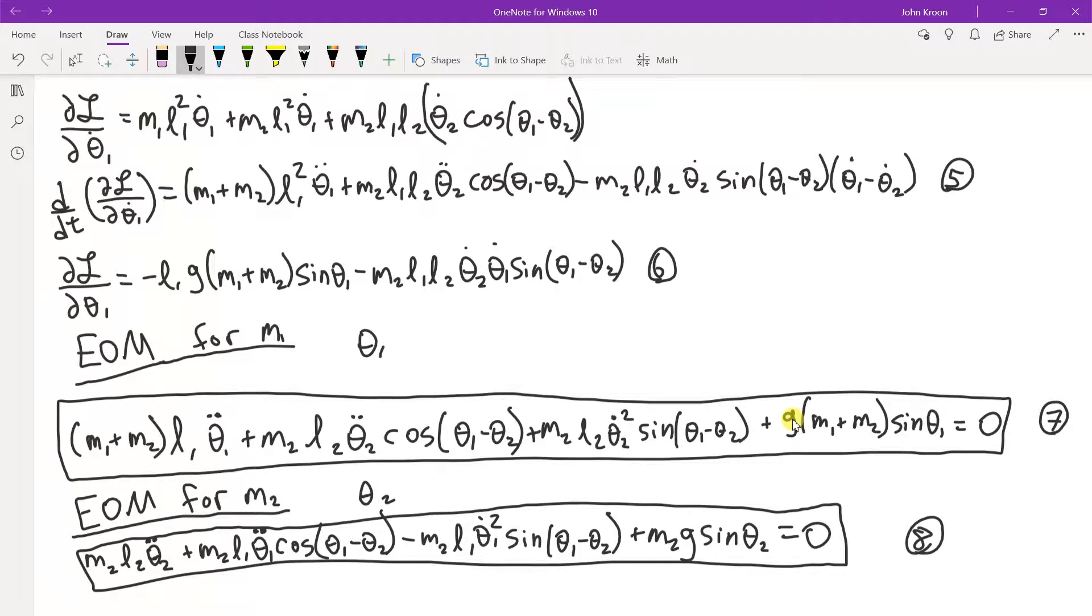The solutions of which can be plotted in Mathematica using numerical solutions of coupled differential equations. And so you have the equations of motion for M2 down here. Again, same story, it shows quantities from both theta 1 and theta 2, L1 and L2, and M1 and M2. But this is the equation of motion for M2.